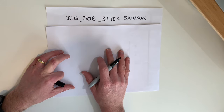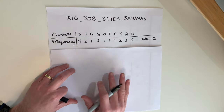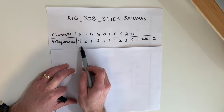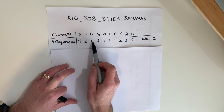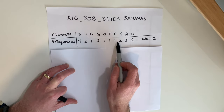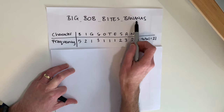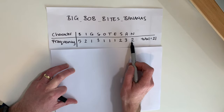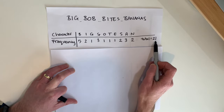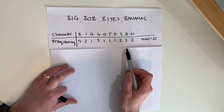We need to look at the frequency for each character, and I've got that here. There were five B's, two I's, one G, three spaces, one O, one T, one E, two S's, three A's — all in 'bananas' — and two N's, also both in 'banana.' The total is 21, which is a good sanity check: if you add those up and get the same length as your string, you know you haven't missed any.